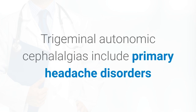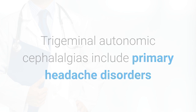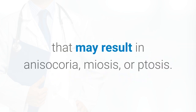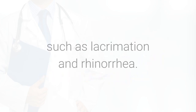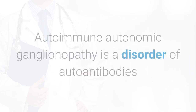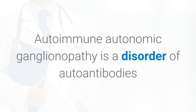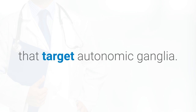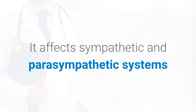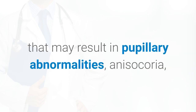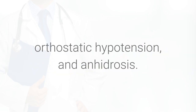Trigeminal autonomic cephalalgias include primary headache disorders that may result in anisocoria, miosis, or ptosis. They present with unilateral head pain with ipsilateral autonomic symptoms such as lacrimation and rhinorrhea. Autoimmune autonomic ganglionopathy is a disorder of autoantibodies that target autonomic ganglia, affecting sympathetic and parasympathetic systems, which may result in pupillary abnormalities, anisocoria, orthostatic hypotension, and anhydrosis.